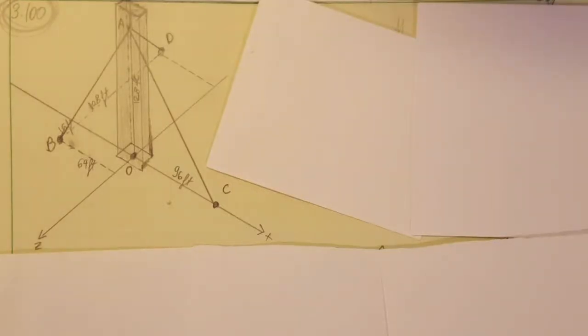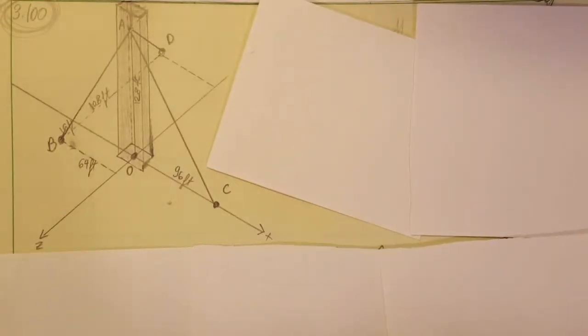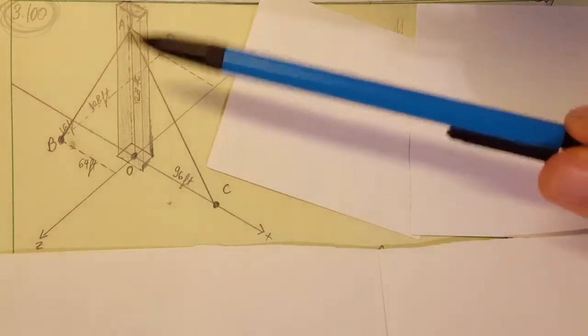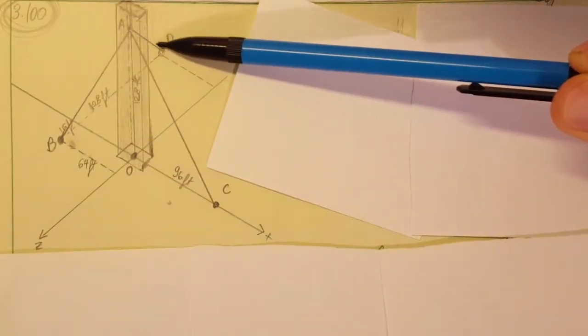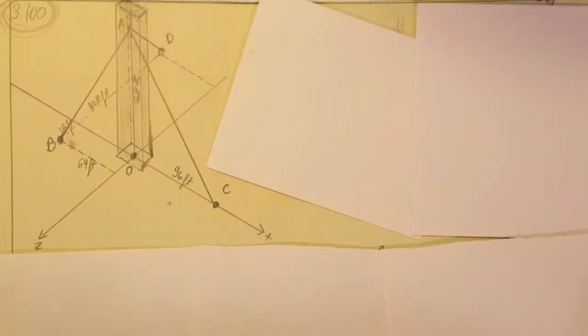Okay, in this vectors problem we have an antenna that is guided by three cables as shown here. Knowing that the tension in cable AD, this one back here, we have a tension of 270 pounds, they want us to replace this force that exists here with a force and couple system down here at the center of the base at point O of the antenna.